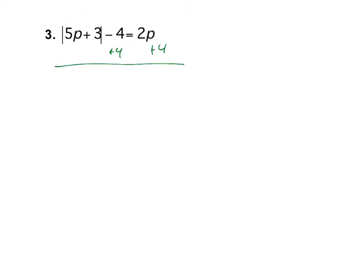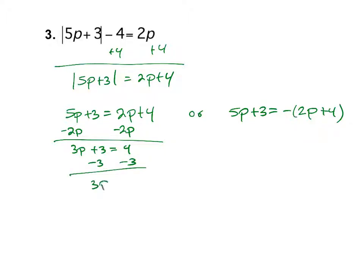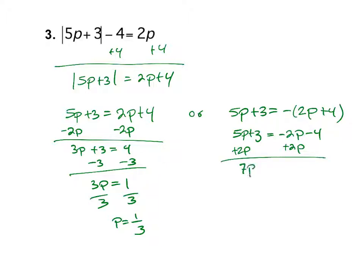I'm going to add 4 on both sides, so I have the absolute value of 5p plus 3 equals 2p plus 4. So 5p plus 3 equals 2p plus 4, or 5p plus 3 equals the opposite of 2p plus 4. Subtracting 2p gives 3p plus 3 equals 4, then minus 3 gives 3p equals 1, dividing by 3 gives p equals 1/3. For the second equation: 5p plus 3 equals negative 2p minus 4, so plus 2p gives 7p plus 3 equals negative 4, minus 3 gives 7p equals negative 7, divided by 7 gives p equals negative 1.